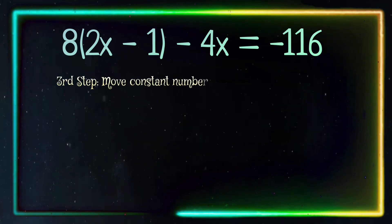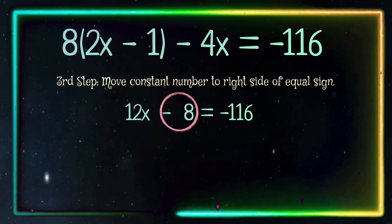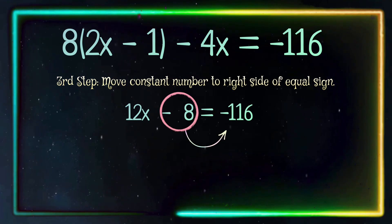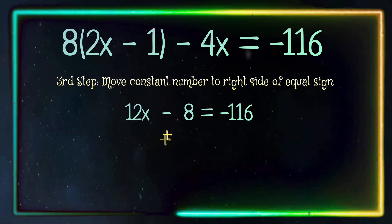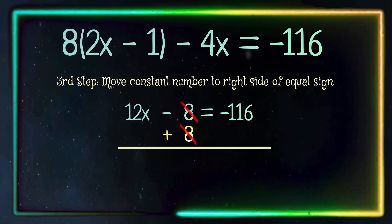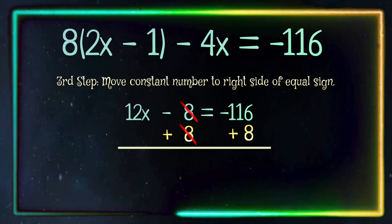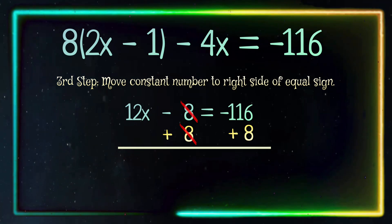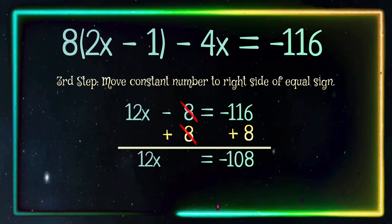Now our third step. Move our constant number, which is negative 8, to the right side of the equation. In order to do that, we are going to cancel out the negative 8 by adding 8, giving us 0 to cancel it out. And what we do to one side we have to do to the other side. So now we have to add 8 to the right side of the equation. Negative 116 plus 8 equals negative 108.